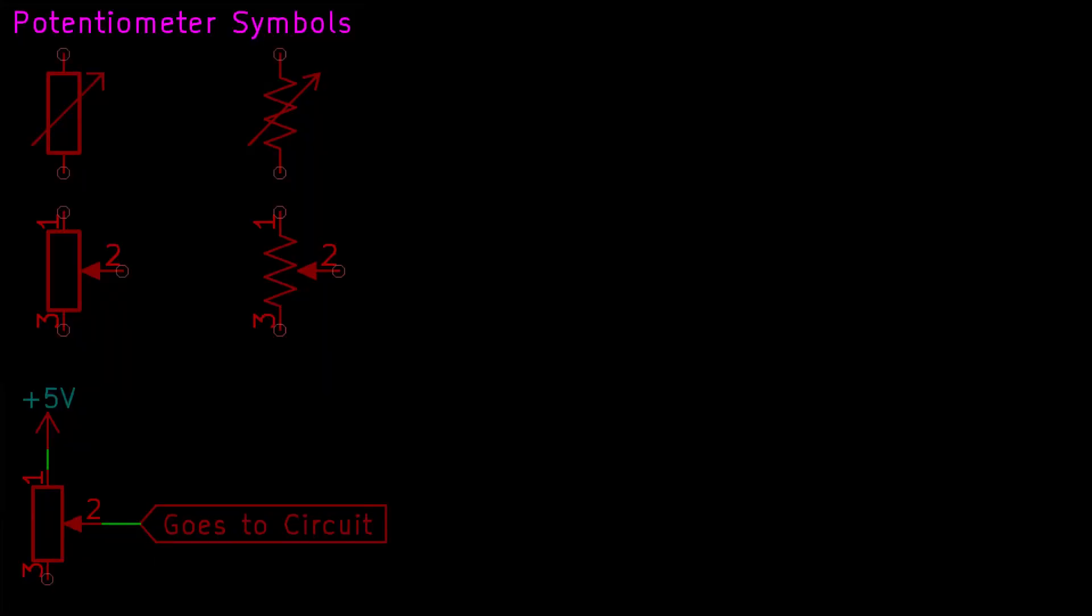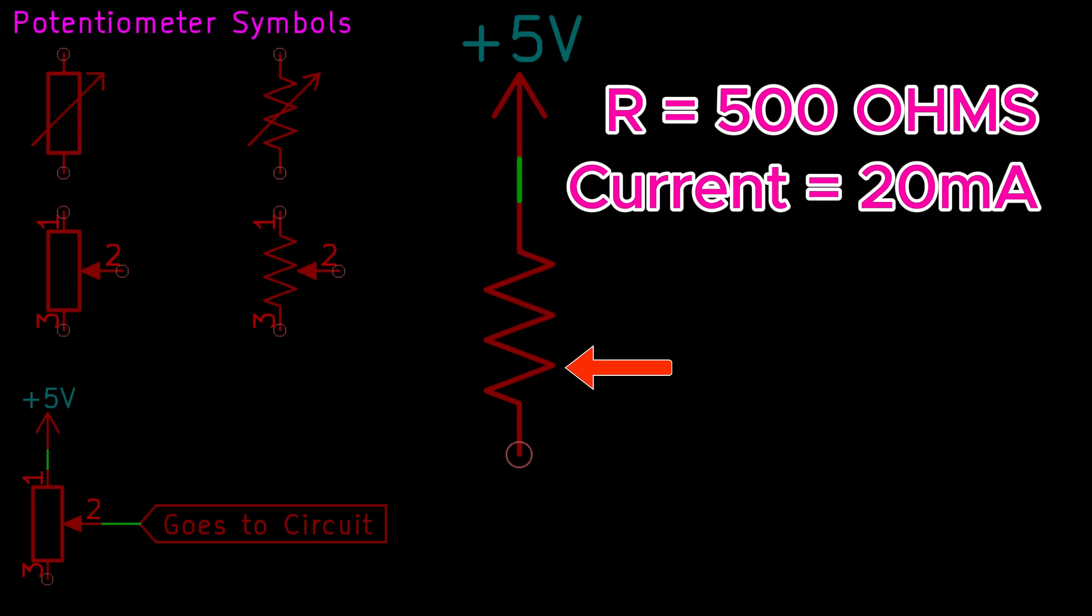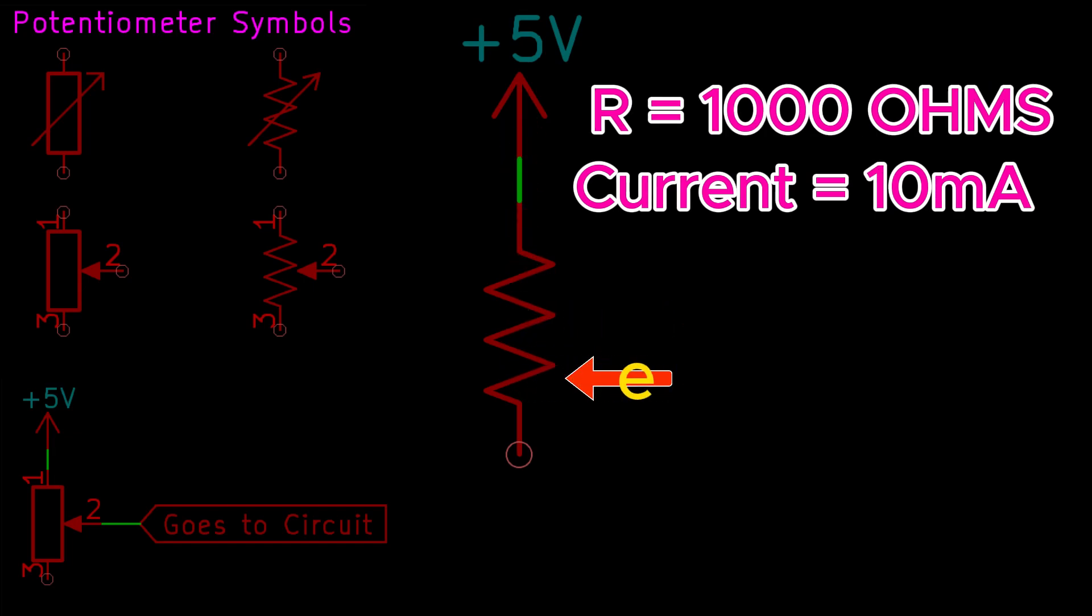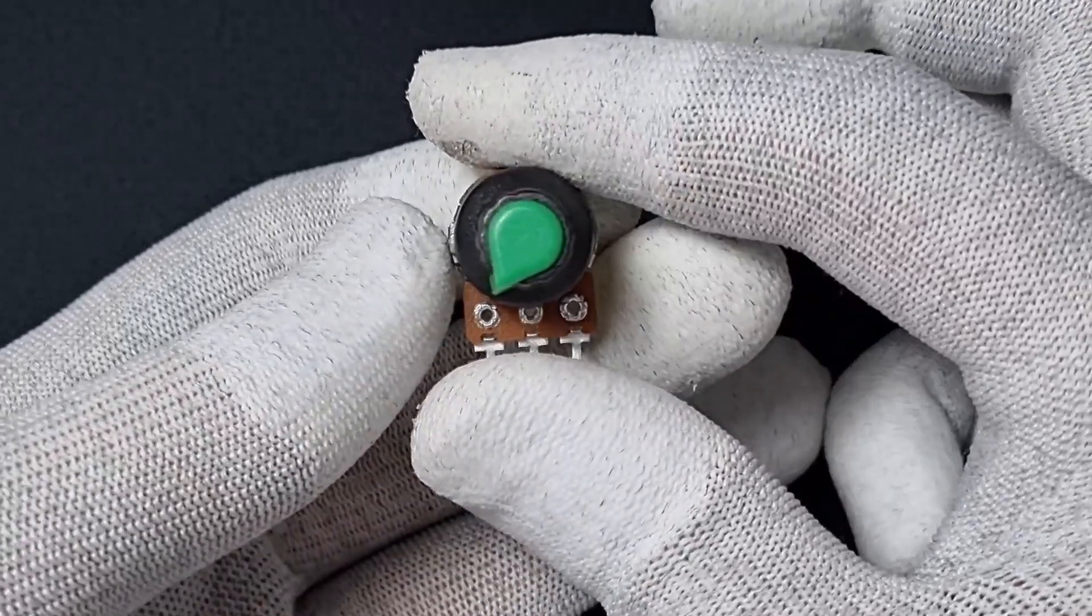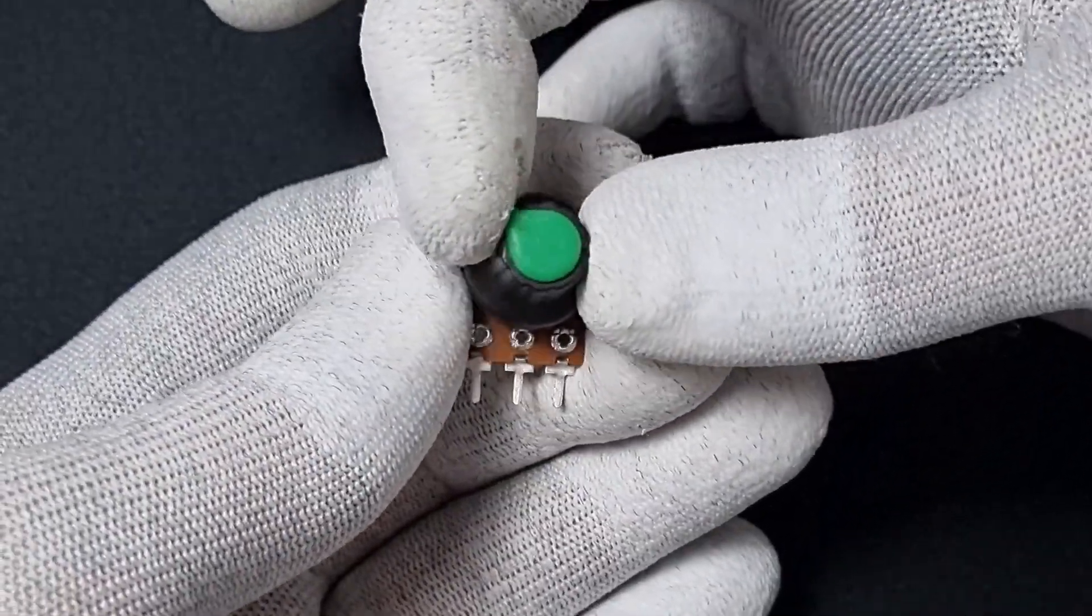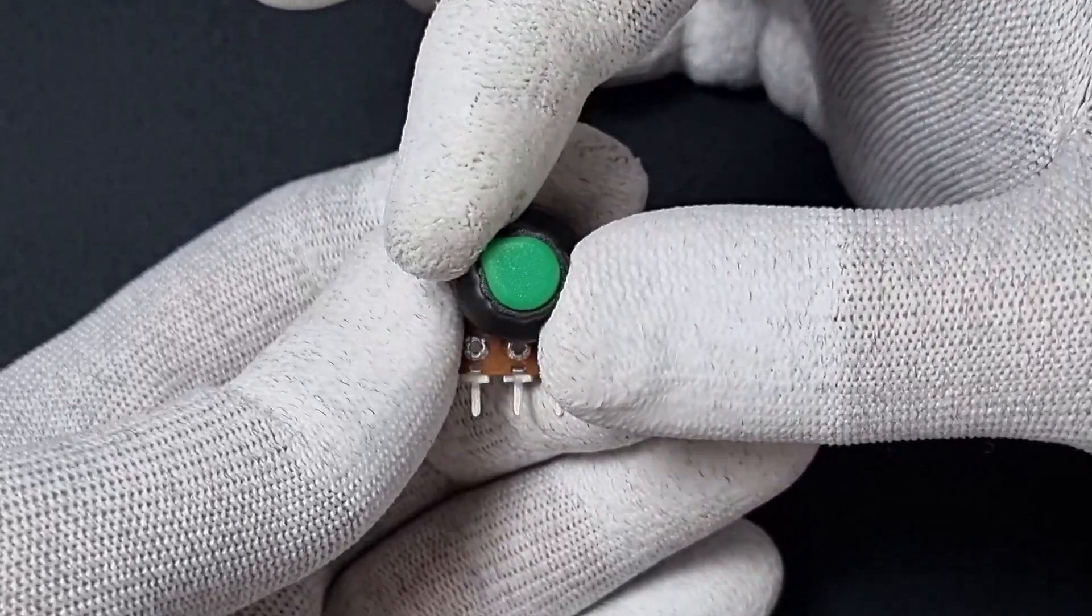If you connect 5 volts to the first pin and leave the last pin unconnected, you now have an adjustable resistor. This setup controls current through the circuit. Remember, the resistance changes linearly. For example, if we read 2.5 kilo ohms on a 5 kilo ohm potentiometer, we know its position is in the middle.